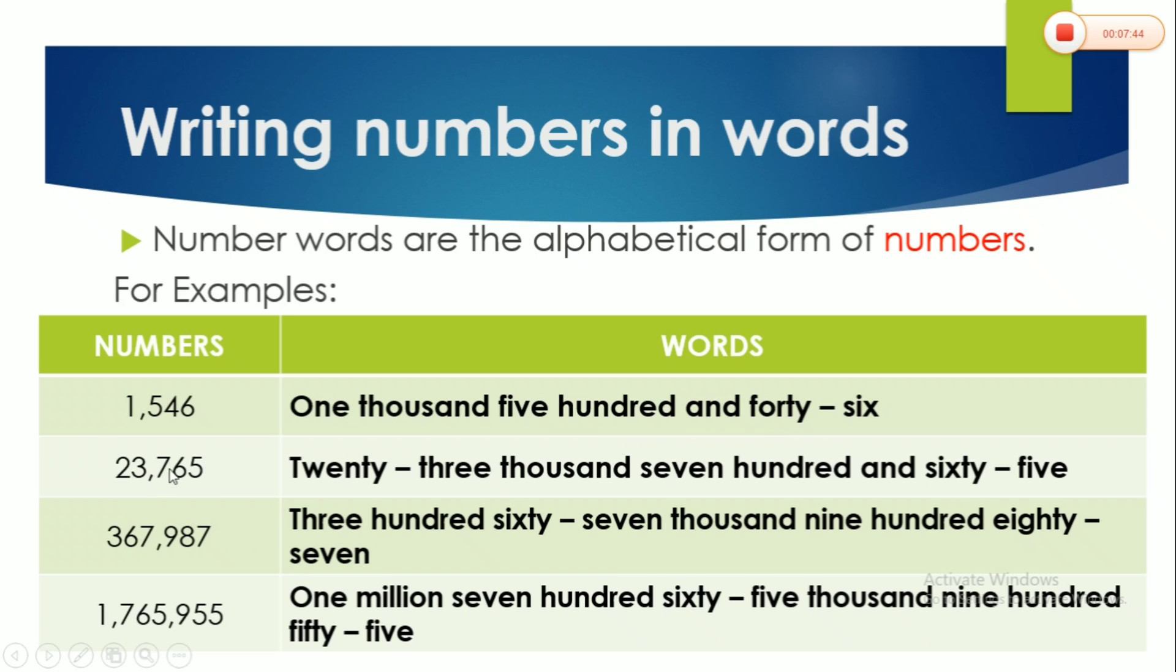So here we have 23,765. Or in alphabetical form, it is shown in the video. We have 367,987. So as you can see, we don't put 'and'. So they are all the same. And here, 1,765,955.